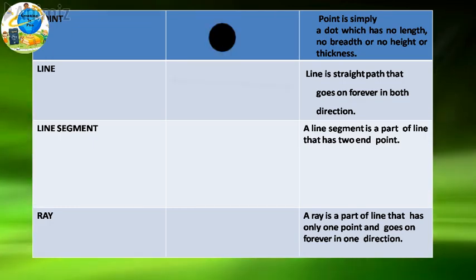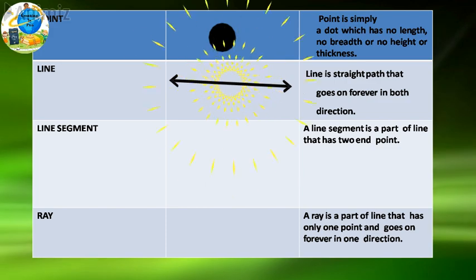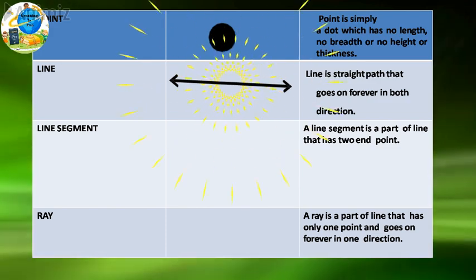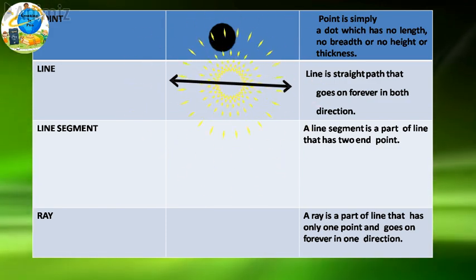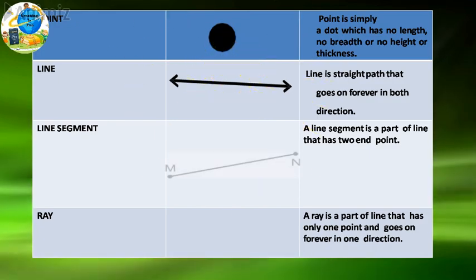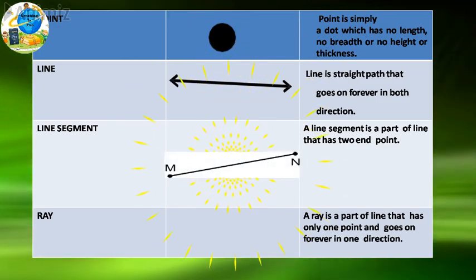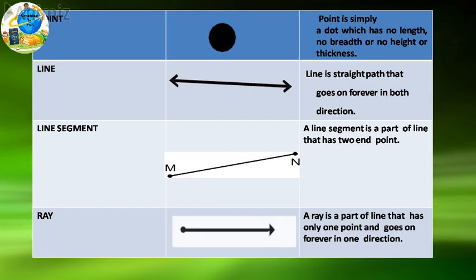Point is simply a dot which has no length, no breadth, no height, and no thickness. Line is a straight path that goes on forever in both directions. Line segment is a part of a line that has two endpoints. And a ray is a part of a line that has only one endpoint and goes on forever in one direction.